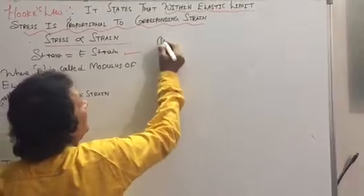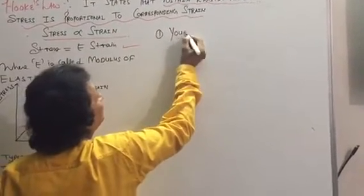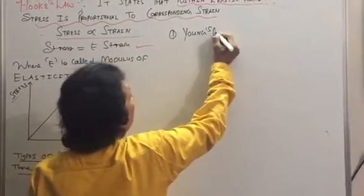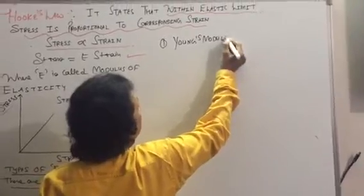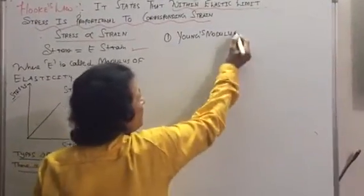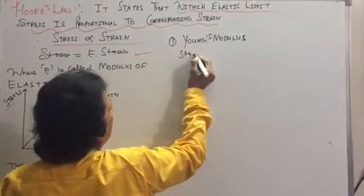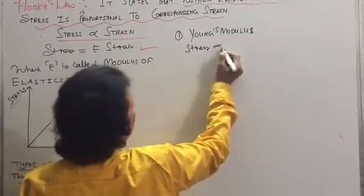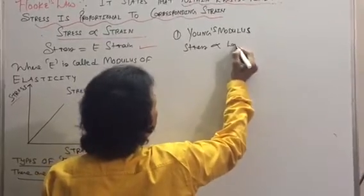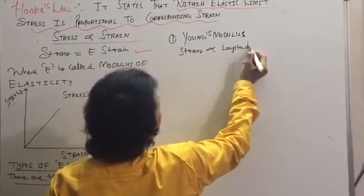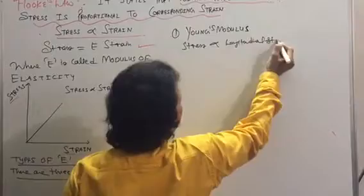First is Young's modulus. That is, stress is proportional to longitudinal strain.